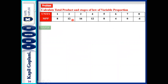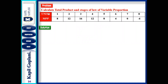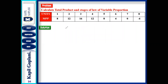Now, here is a problem. You have to find TP given the stage of variable proportion. Whenever you are solving these types of questions, first you have to understand the mathematical relationship between TP and MP. In this question, I have been given MP. The mathematical relation of MP with TP is: the summation of MP will give me TP. So I have to add all the MPs.